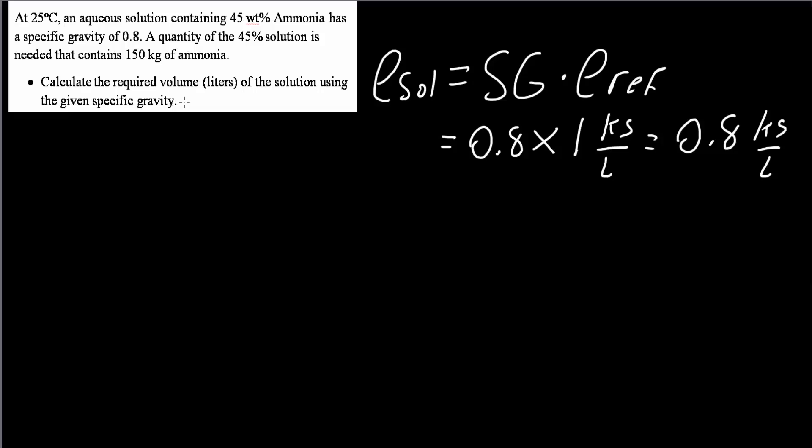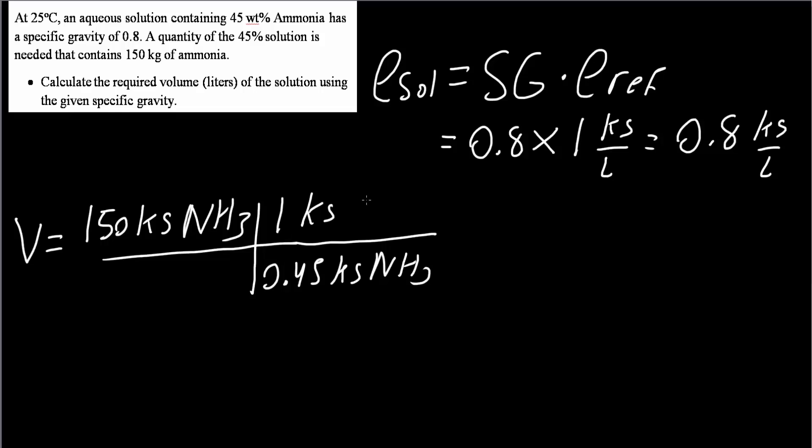And here we want to calculate the required volume in liters. We are given that the solution requires 150 kilograms of pure ammonia. So we can say that the volume is equal to 150 kilograms of pure ammonia. And we know that the solution contains 45 weight percent ammonia. So that means 0.45 of pure ammonia is equal to 1 kilogram of the solution. And now we use density. So our density of the solution was 0.8 kilograms per liter. So 0.8 kilograms of the solution would be 1 liter of the solution.